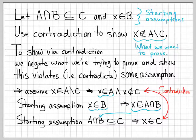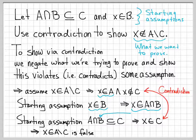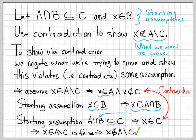That doesn't make any sense, so that's a contradiction. At this point we can conclude that the assumption we started with — namely X is an element of A difference C — has to be false, because it resulted in something nonsensical, a contradiction. So X is an element of A difference C has to be false. That means the negation of it is true: X is not an element of A difference C. And that's exactly what we wanted to prove.